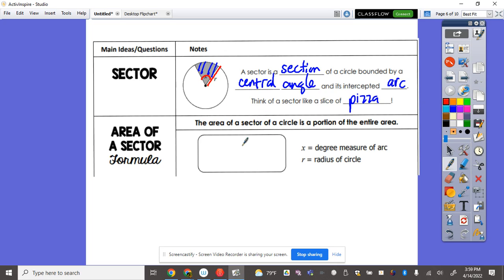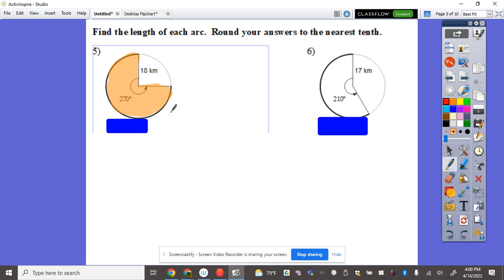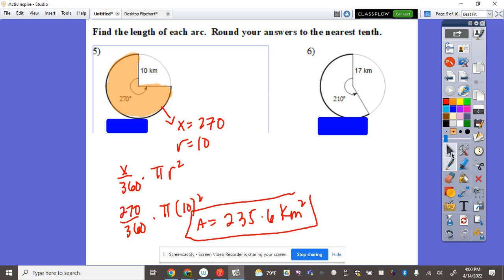For you to identify the area of a sector, it's going to be x over 360, so whatever the central angle divide by 360 times the formula pi r squared. So the central angle here, the x is 270, the radius here is 10. Applying the formula x over 360 times pi r squared, it will be 270 divided by 360 times pi 10 squared. Using our calculator, 270 divided by 360 times pi times 10 squared, the answer is 235.6 kilometers squared because it's an area.